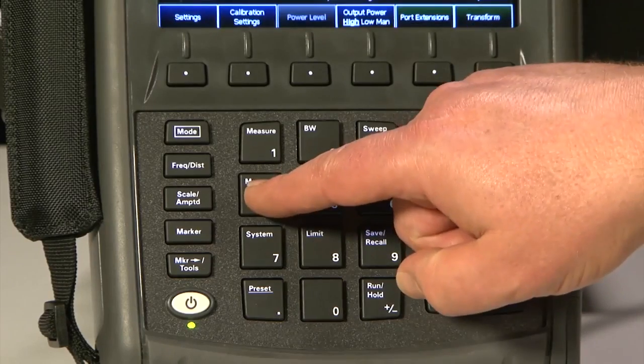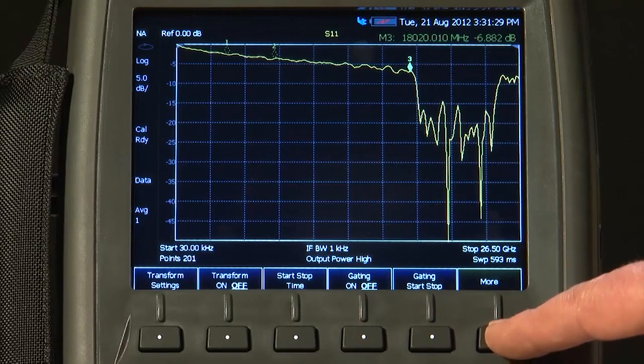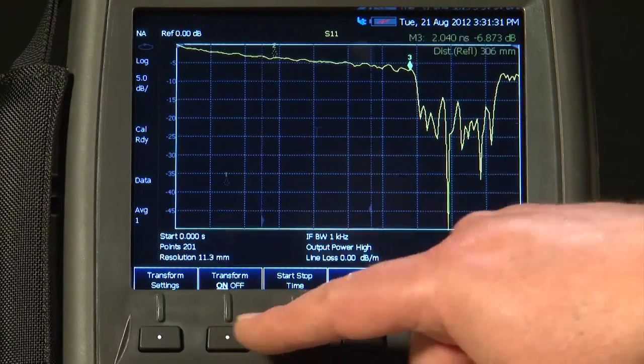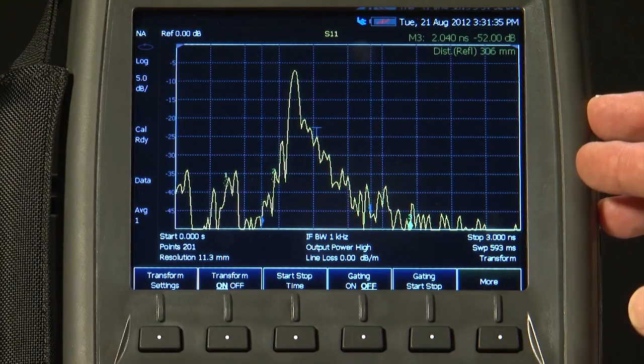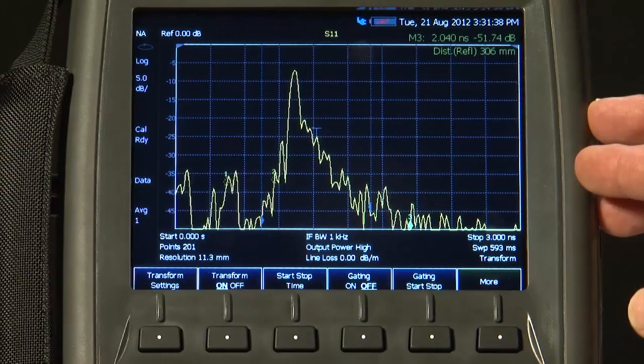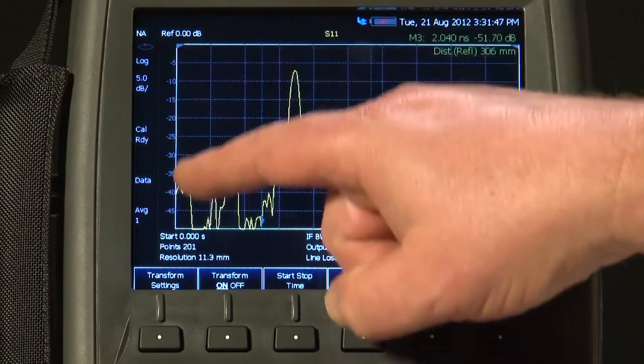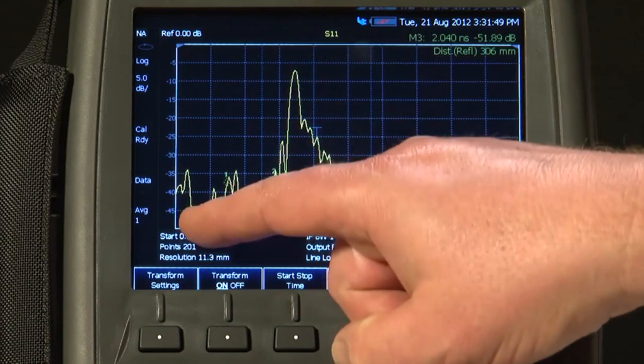So I'll press Mesh Setup, Transform and Transform On. And the FieldFox is now performing an inverse Fourier transform of the return loss trace. We are still measuring return loss on the Y axis in dB.